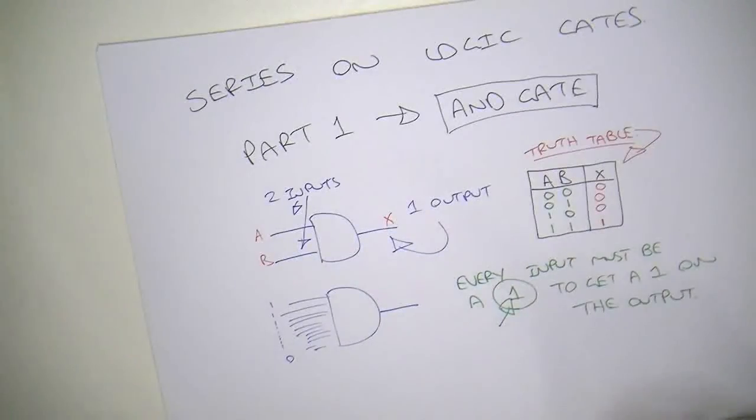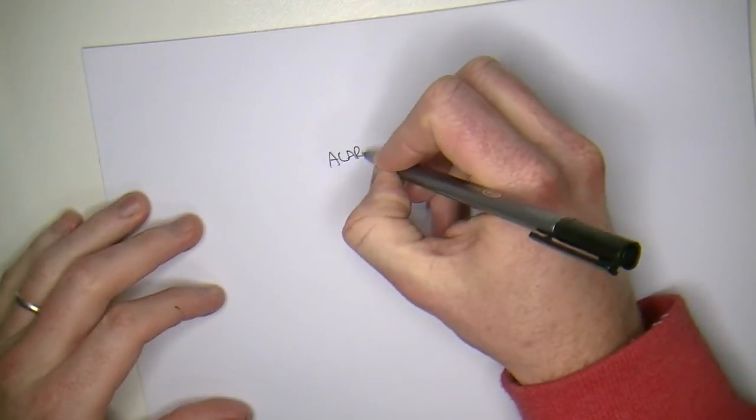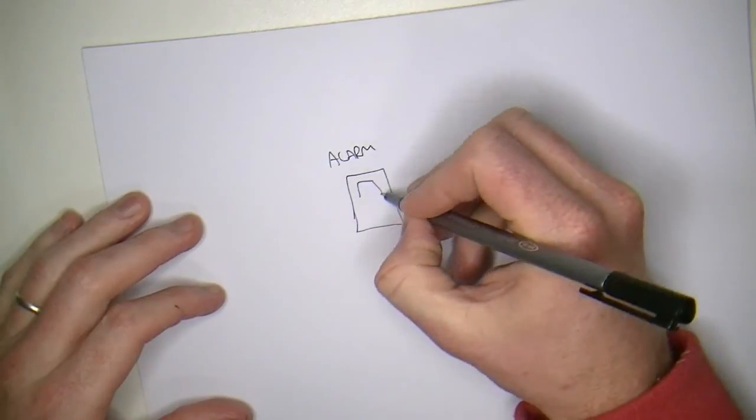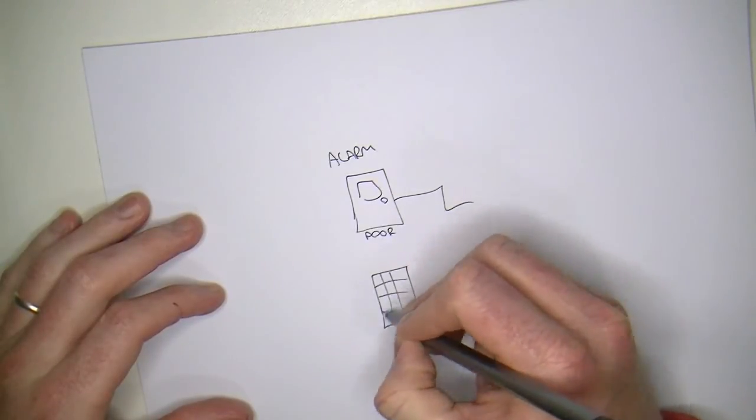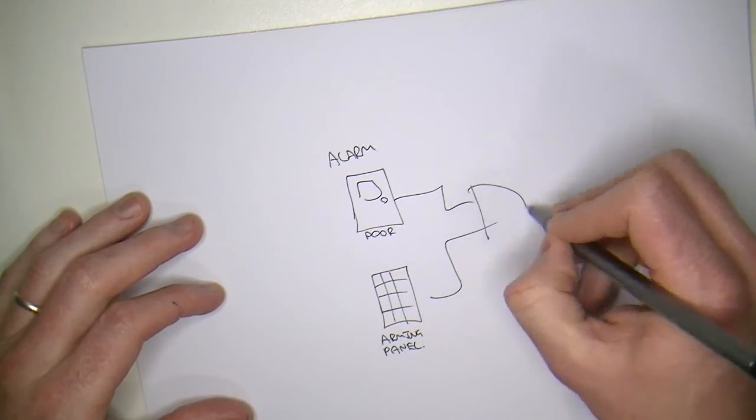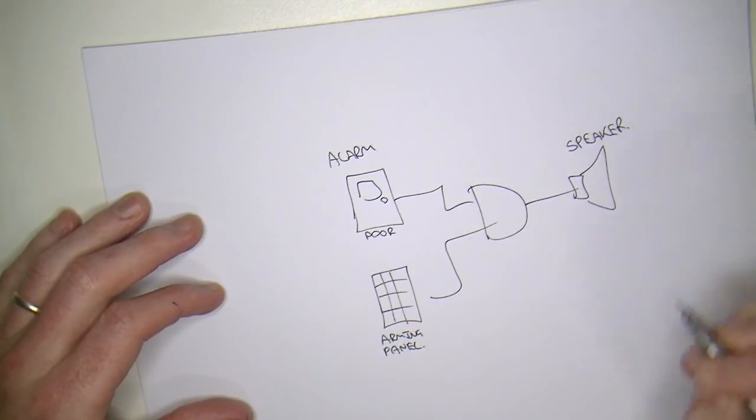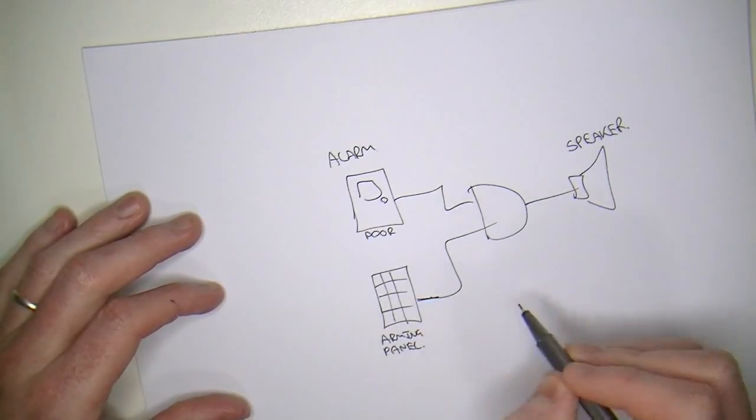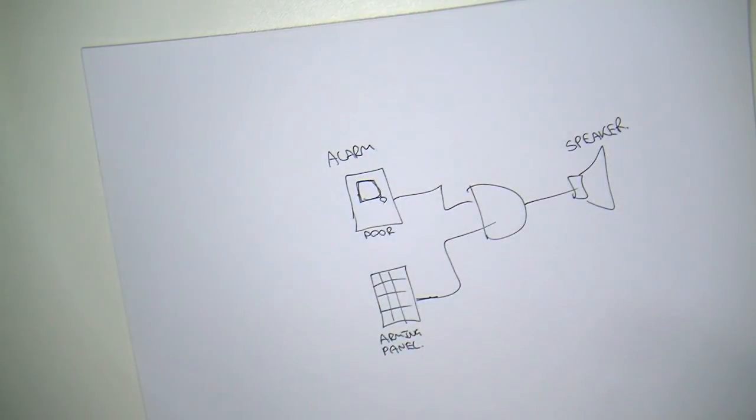So, I guess a good place or a practical application of using an AND gate would be, let's say, some simple alarm system. So, we've got an alarm. And with this alarm, there is a door. So, there's a sensor on the door. And then there's like an arming panel. Very simple alarm. We have a speaker on the output.